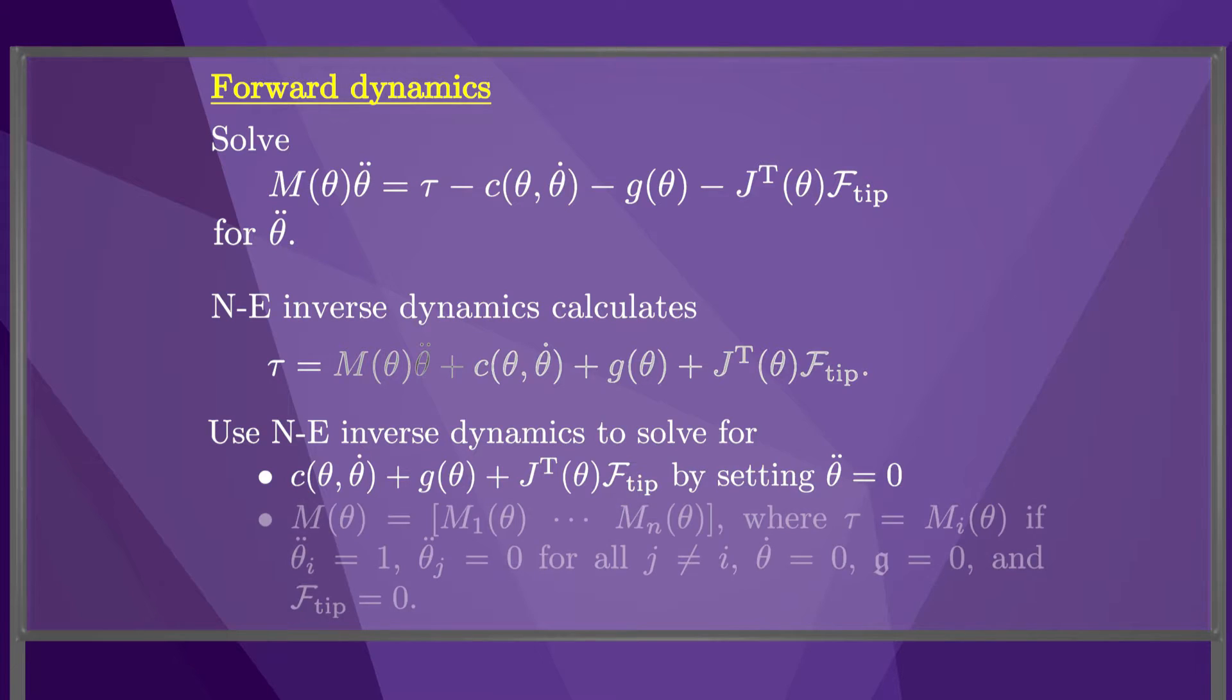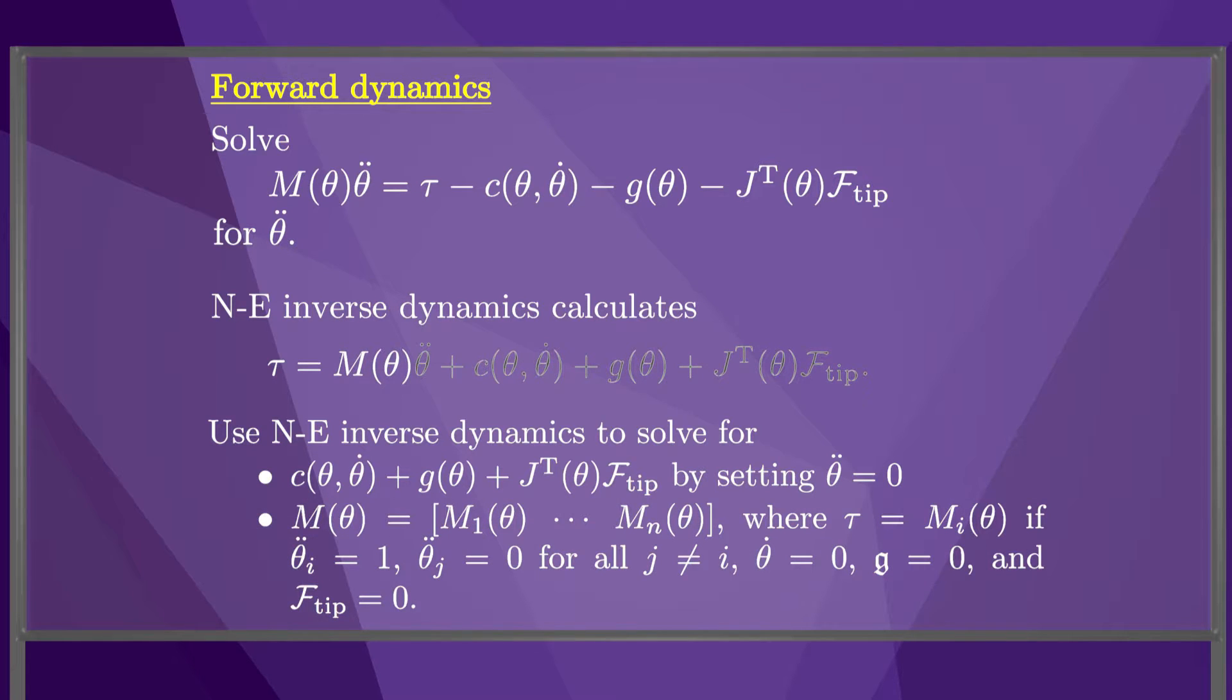Next, we use the inverse dynamics to solve for the mass matrix M of theta. To do this, we call the inverse dynamics algorithm n times, once for each joint, and each time we set gravity, the end-effector wrench, the joint velocities, and all joint accelerations except one equal to zero. We set the ith joint acceleration to be one. Then the joint torque vector tau found by the inverse dynamics algorithm is the same as the ith column of the mass matrix M. By calling the inverse dynamics algorithm n times, we can construct the mass matrix M.